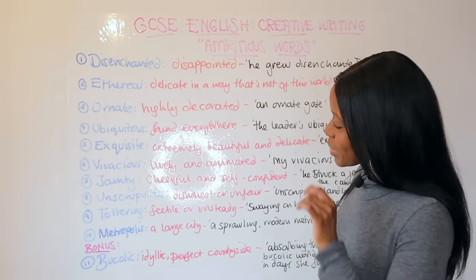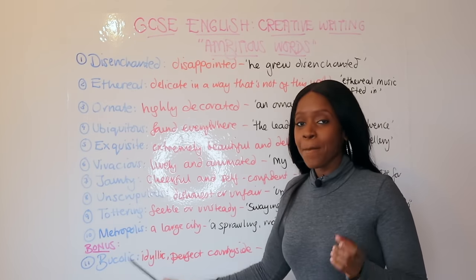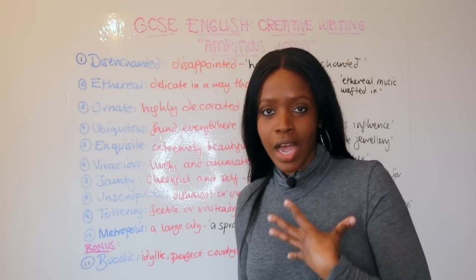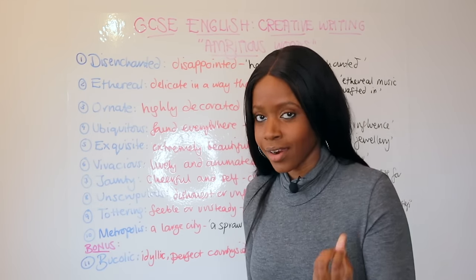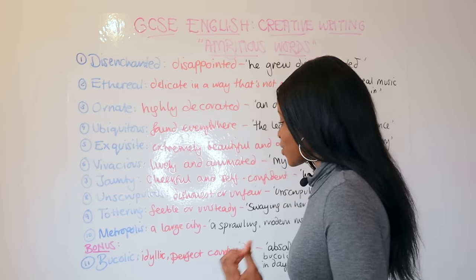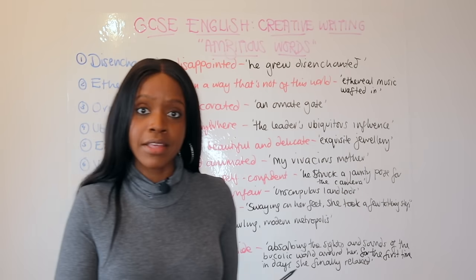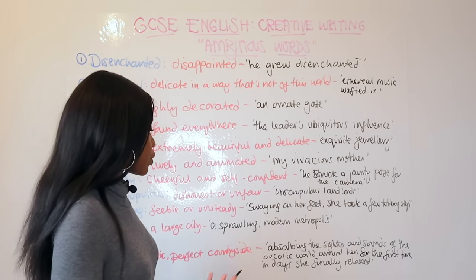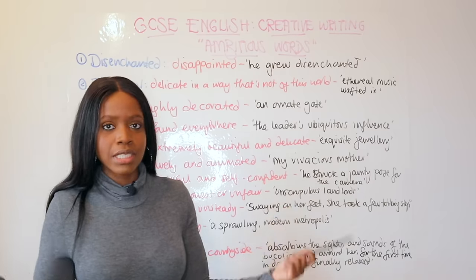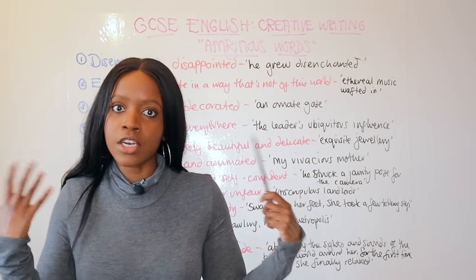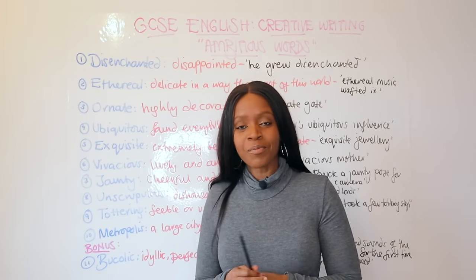The tenth ambitious word is 'metropolis.' For example: 'I live in a very bustling metropolis, which is called London.' Metropolis simply means a large city, and you can talk about a sprawling modern metropolis — whether that's London, New York, or wherever your setting is.